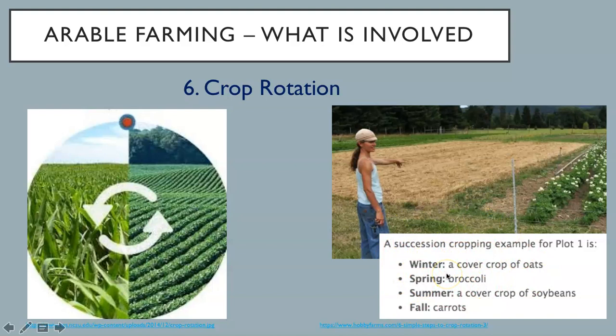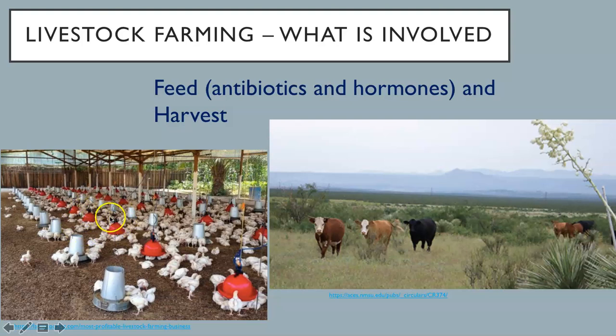In livestock farming, animals need to feed, preferably with plant material unsuitable for human digestion systems, like grass, or creosote and mesquite bushes. The plant material is then converted to valued protein. Pigs can be used to consume waste products and convert them into protein. The problem is that commercial farming of livestock often involves generating feed for the animals, as well as possibly needing to treat them with antibiotics. Some farmers additionally treat them with hormones to increase the amount of protein per animal. The yield of food per unit area from lower trophic levels is greater in quantity — remember the second law of thermodynamics — and is also lower in cost and may require fewer resources.